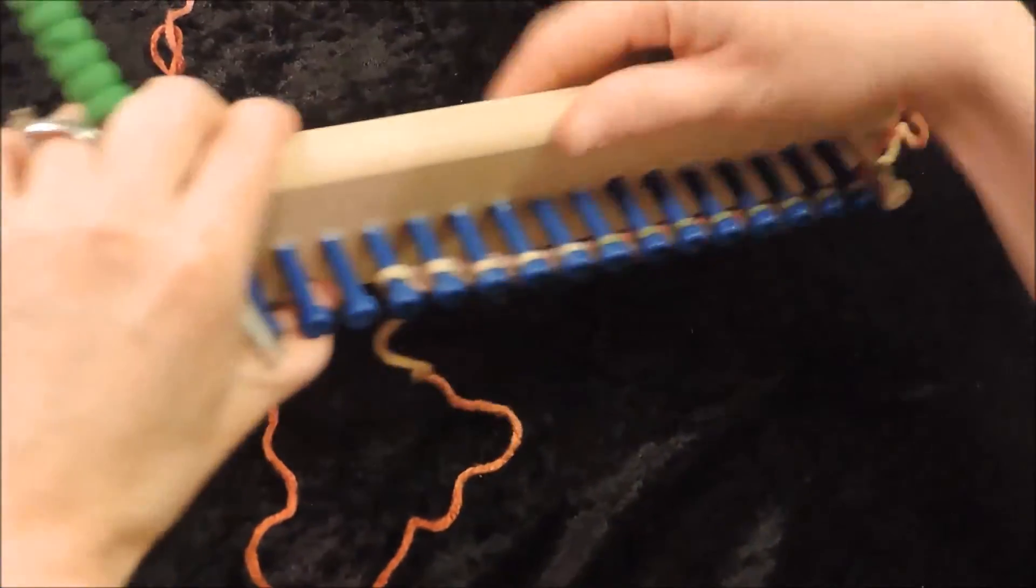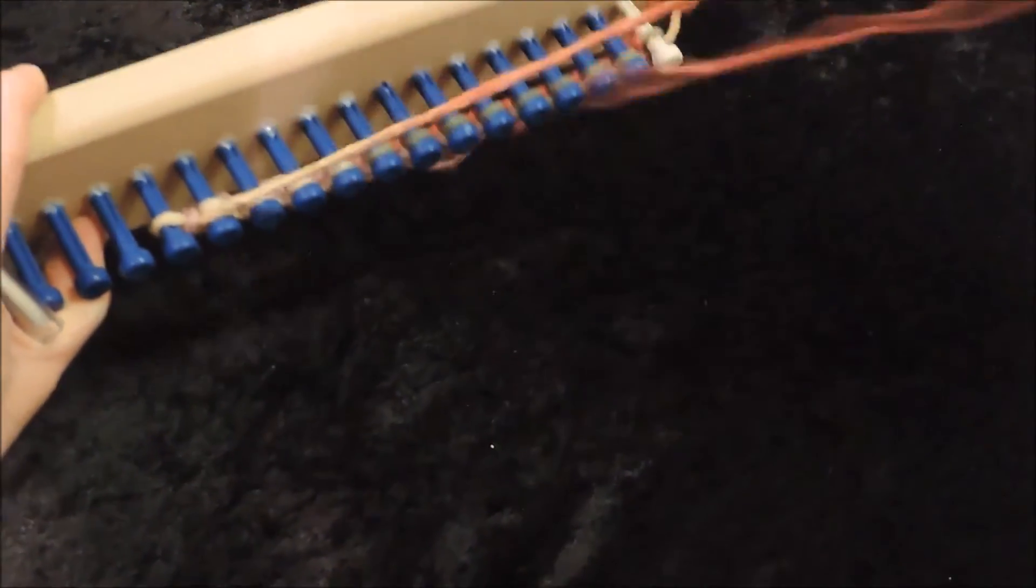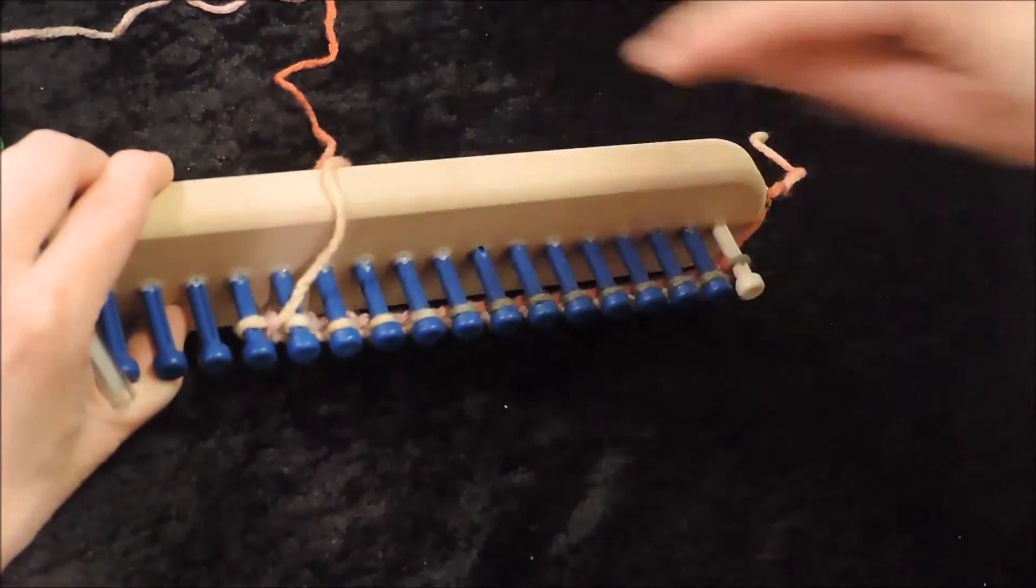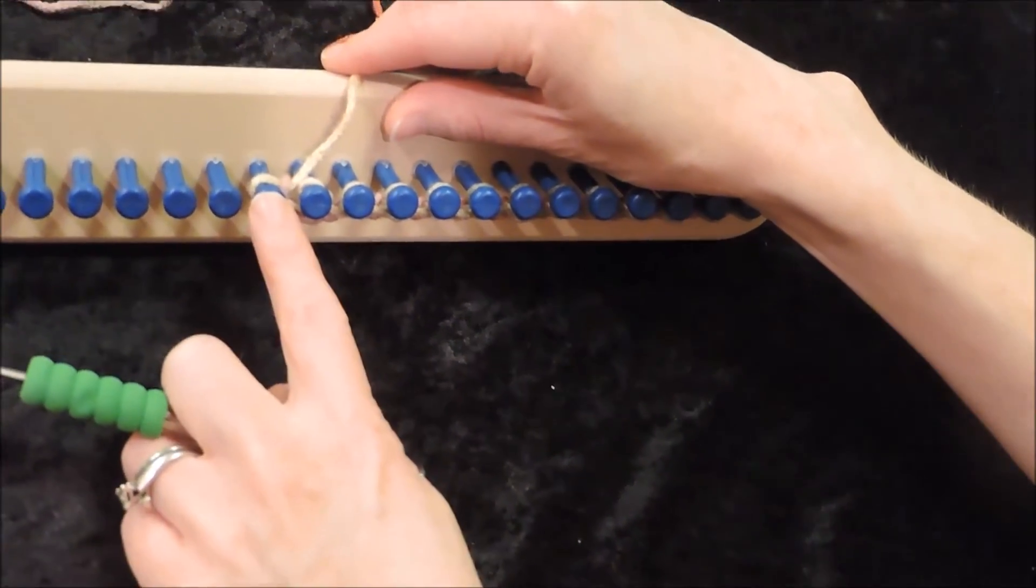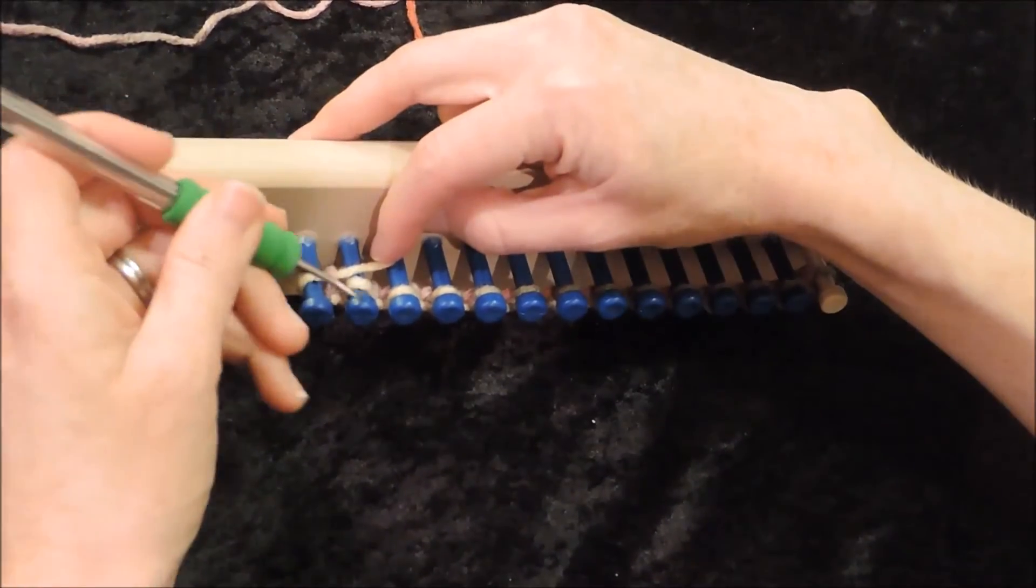Now when I come back the other way what I like to do is turn my loom this direction because it makes it easier for me. And I'm doing the garter stitch. So going back I'm going to do a purl stitch. So I'm skipping this first peg and I start purling on the second peg.